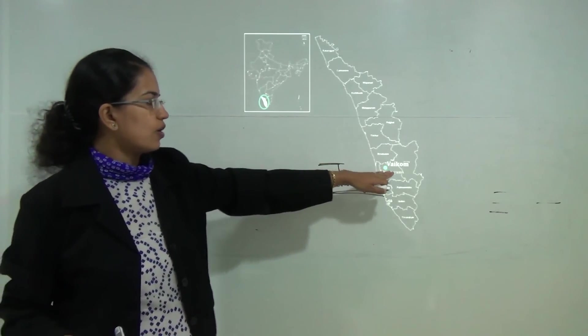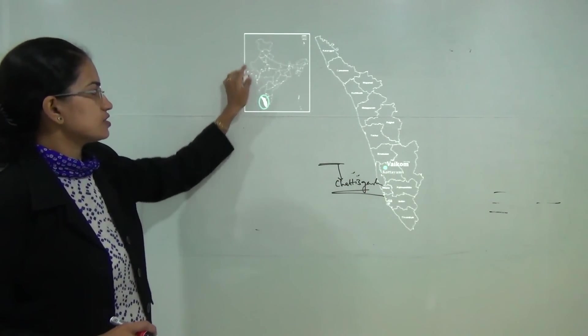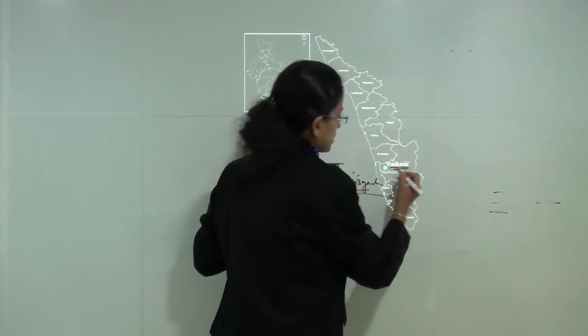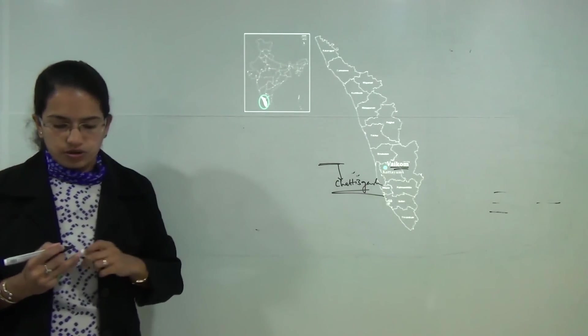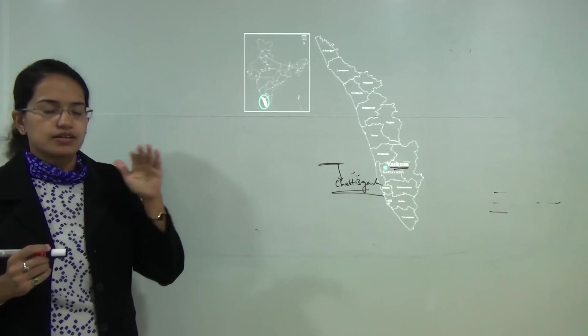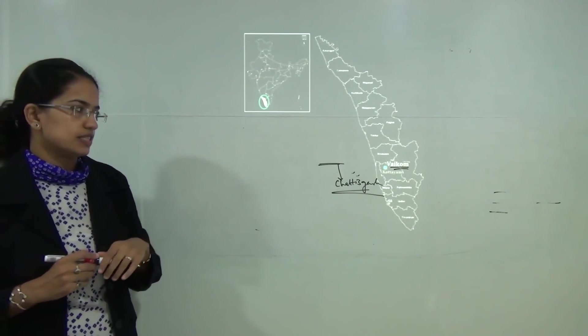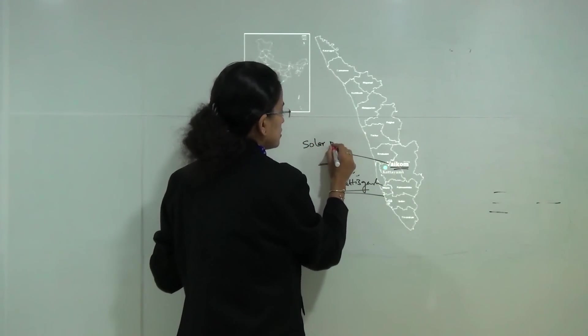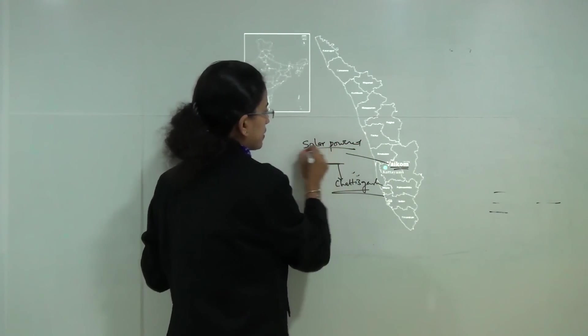Next is Wicom. Wicom lies in Kerala. You have the map of India highlighting the state of Kerala. In Kerala, you have Wicom in Kottayam district and this Wicom is the first solar plant solar powered boat services that it will inaugurate. You would have all the boats that would be solar powered in Wicom district.